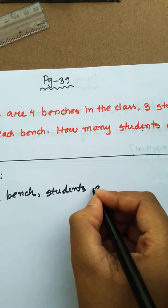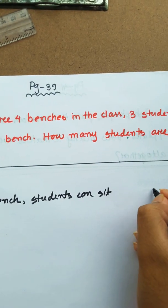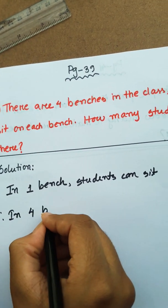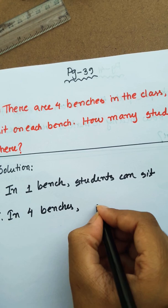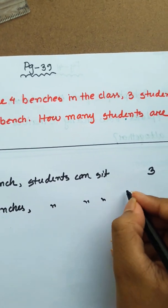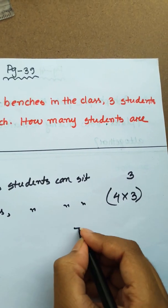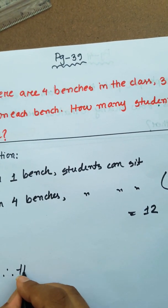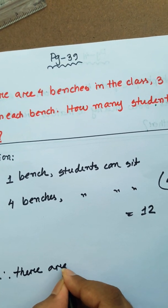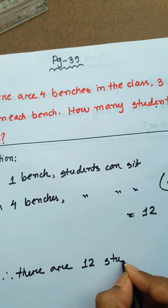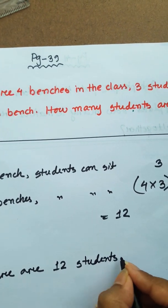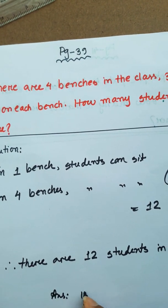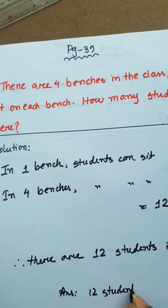Students can seat 3 in each bench. In 4 benches, students can seat 4 into 3 equals 12. So there are 12 students in the class. Answer: 12 students.